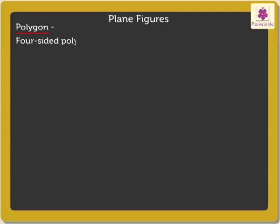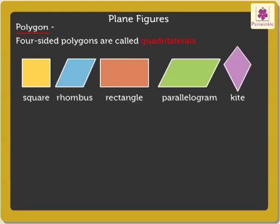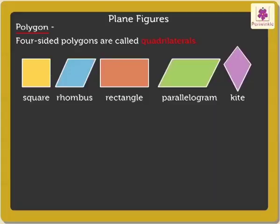Four-sided polygons are called quadrilaterals. Some of the quadrilaterals are square, rhombus, rectangle, parallelogram and kite.